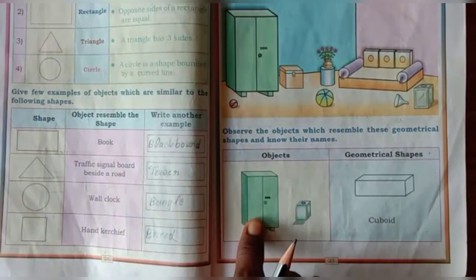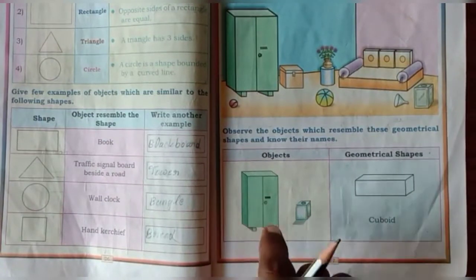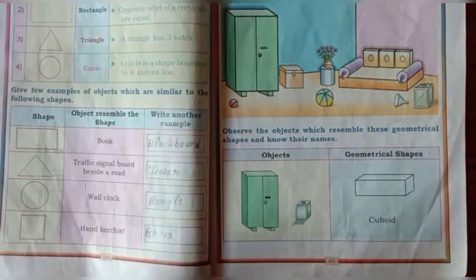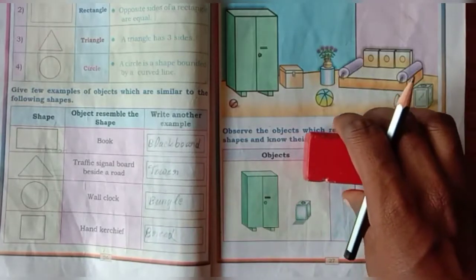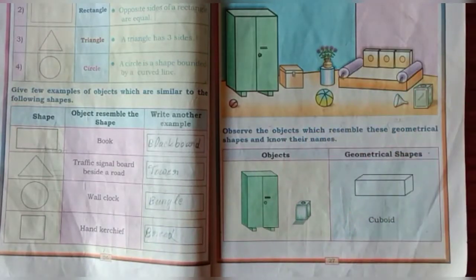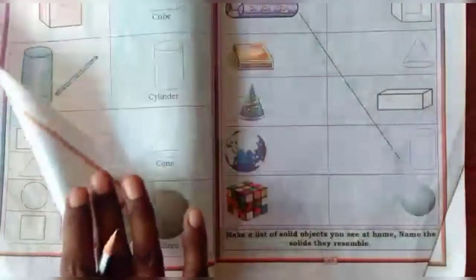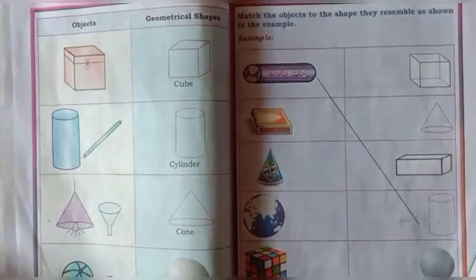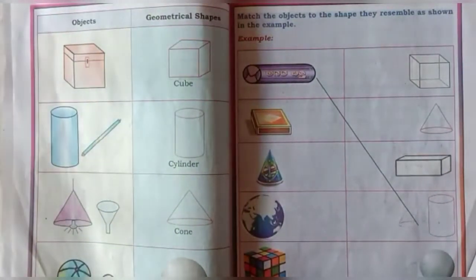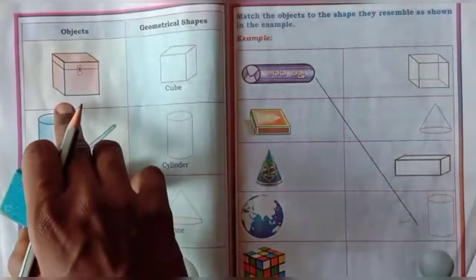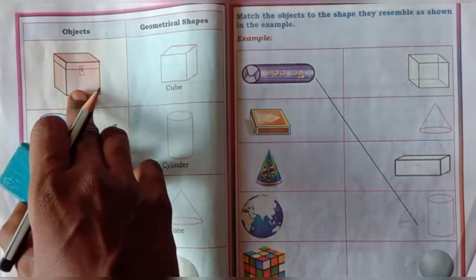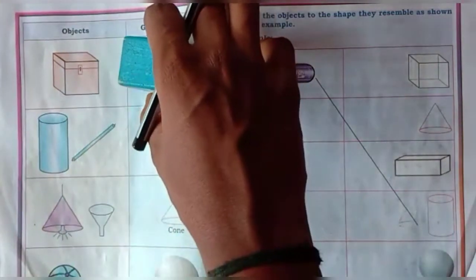What is the geometrical shape of this object? This object is cuboid. Next, turn the page. This object is cube.